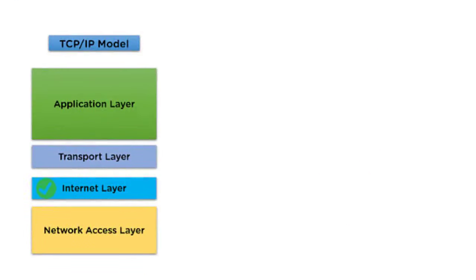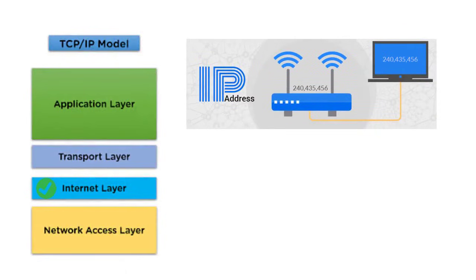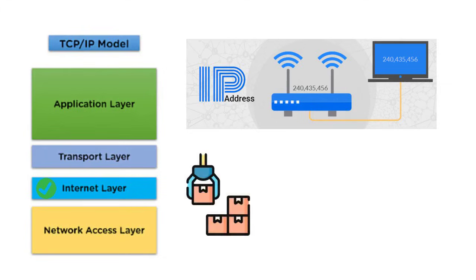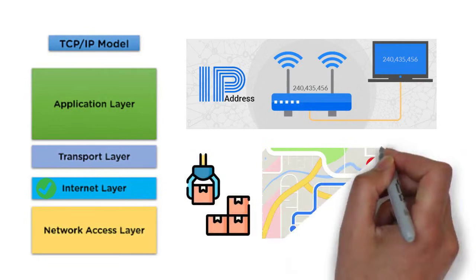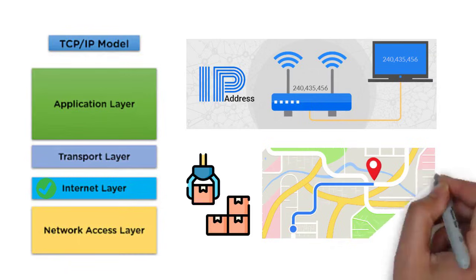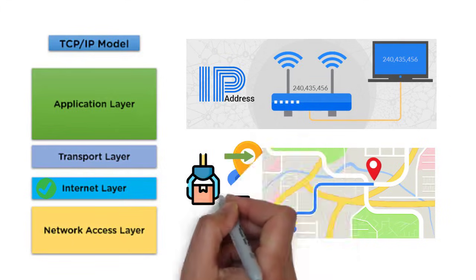Next stop, the Internet layer, powered by the Internet Protocol, IP. Here's where each device gets a unique IP address, like a postal address for computers. Think of this as the International Sorting Center — your parcel's address is checked and the best route is chosen. If you're in London and your friend is in Tokyo, this layer decides which planes and trucks your package hops on, ensuring it moves smoothly through various countries, or networks, until it gets close to its destination.